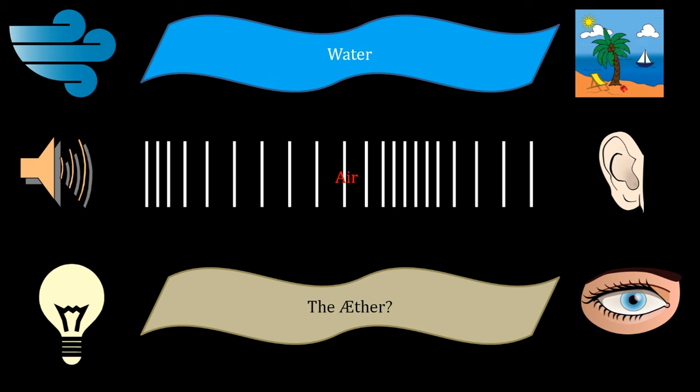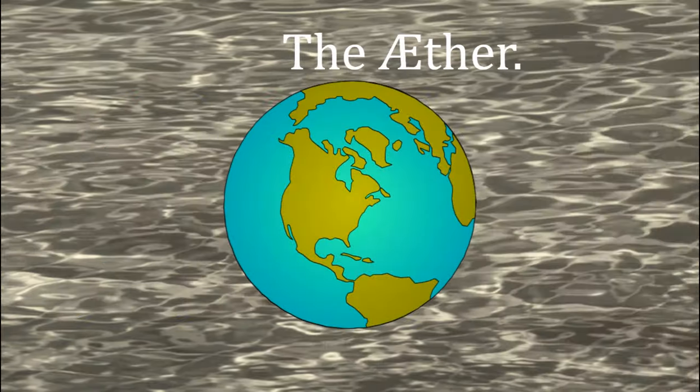In 1887, two American scientists, Albert Michelson and Edward Morley, attempted to measure the ether wind as the Earth moved through the ether.